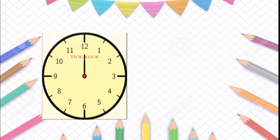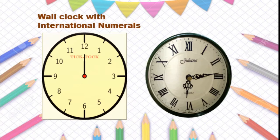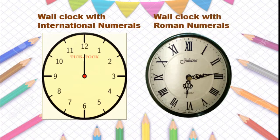Yes students, please observe this carefully. Here we can see two wall clocks. The first wall clock has the international numerals, that is 1 to 12. And in the second wall clock we can see the Roman numerals, that is also from 1 to 12. International numerals you know nicely. Today we are going to learn about the Roman numerals.